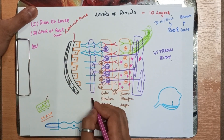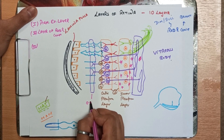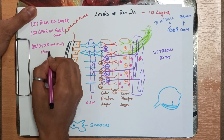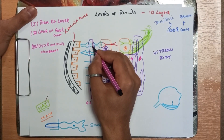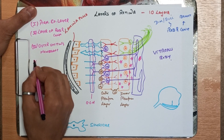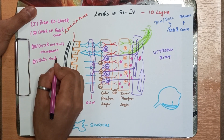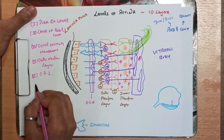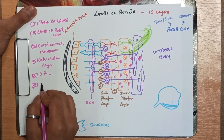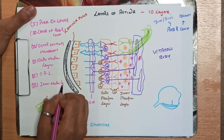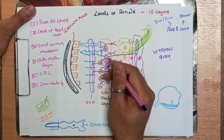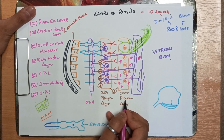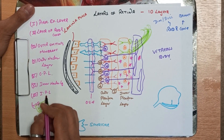The third layer is the outer limiting membrane, made by the Müller cells. The fourth layer is the outer nuclear layer. The fifth layer is the outer plexiform layer. The sixth layer is the inner nuclear layer, in which horizontal cells, amacrine cells, Müller cell nuclei, and bipolar cell nuclei are present. The seventh layer is the inner plexiform layer.